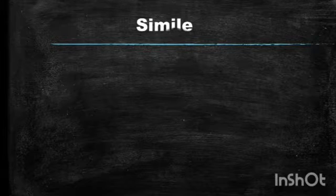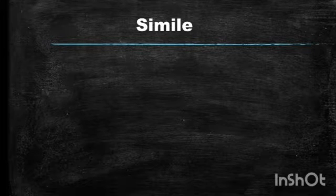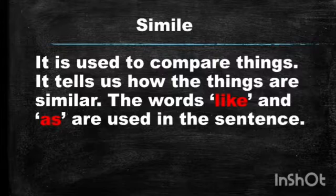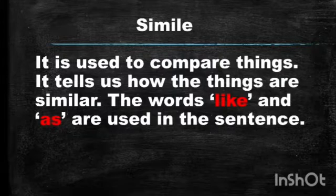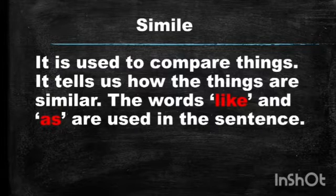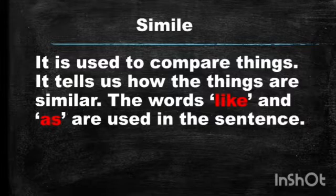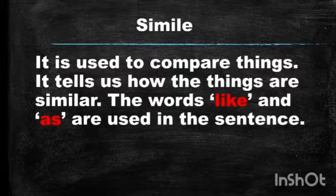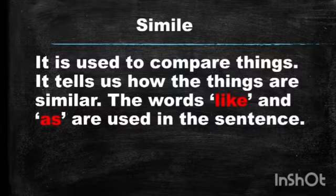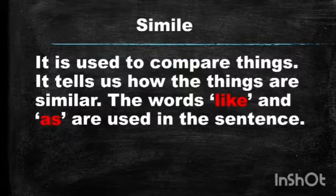The first one is simile. Now what is simile, children? It is used to compare things. It tells us how things are similar, and the words 'like' and 'as' are used in the sentence. Simile is used to compare things, and if you see the word 'like' or 'as' used in the sentence, it means the figure of speech is simile.